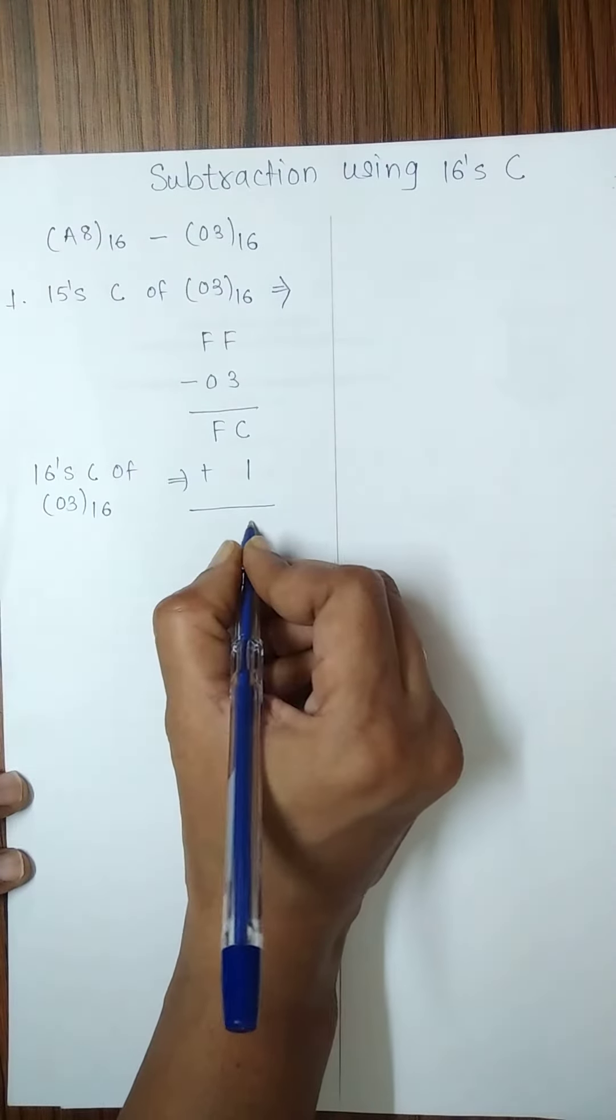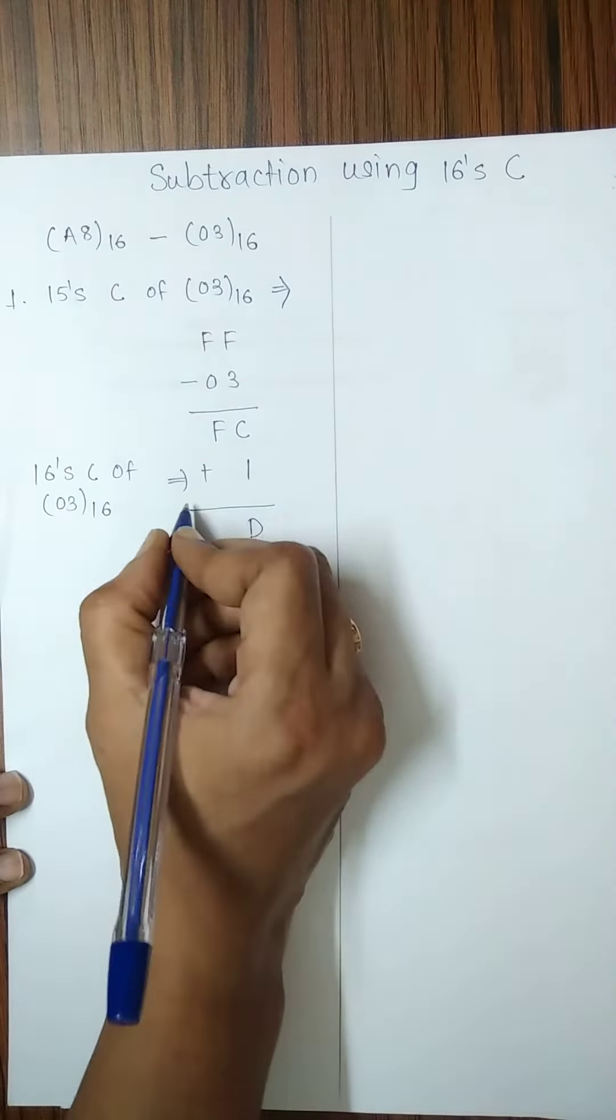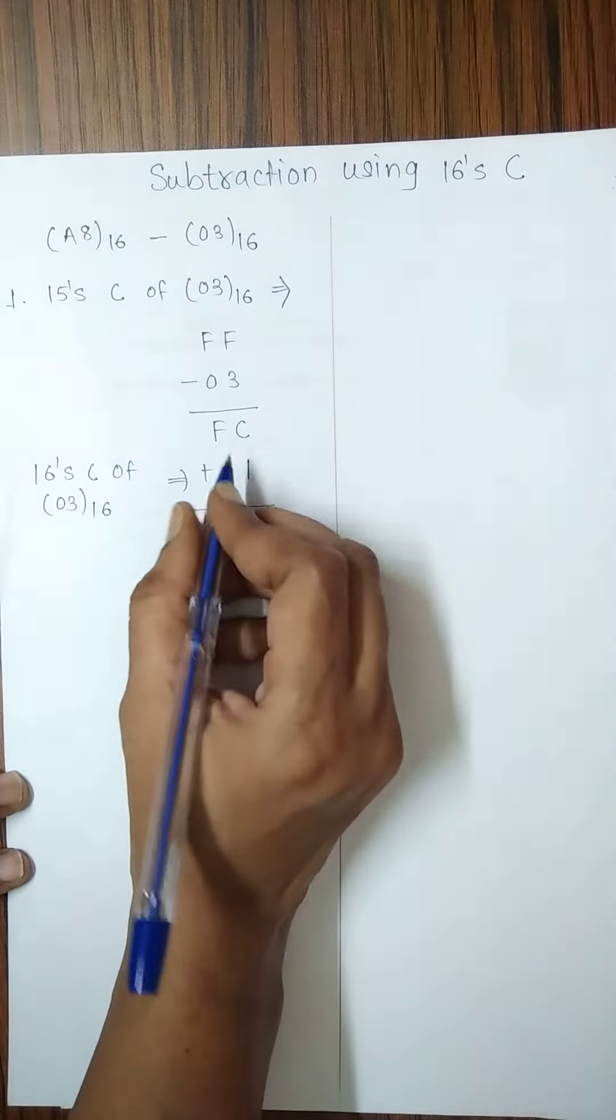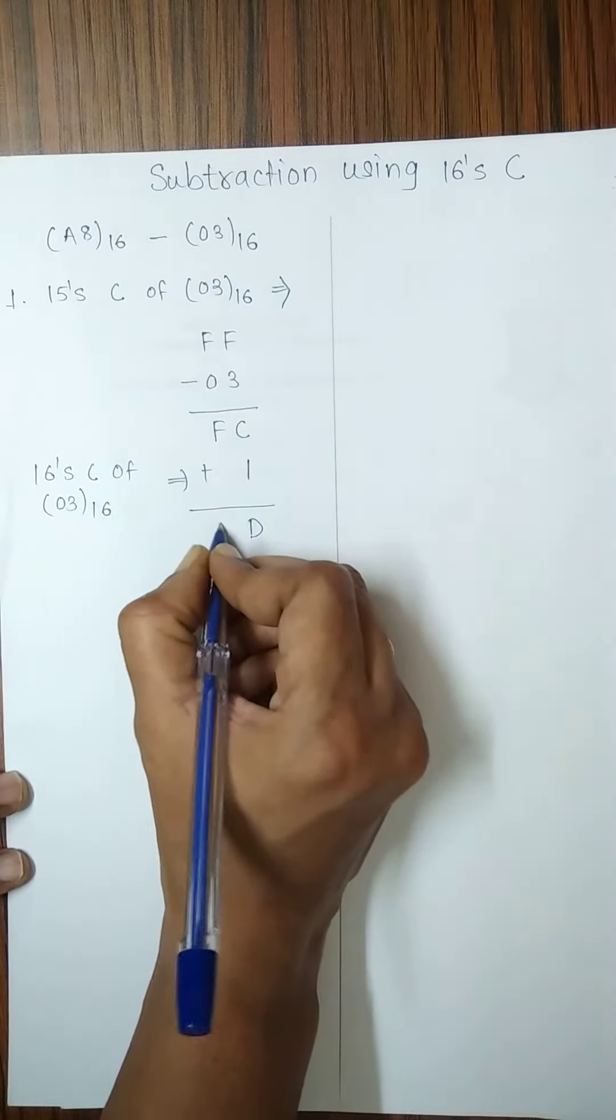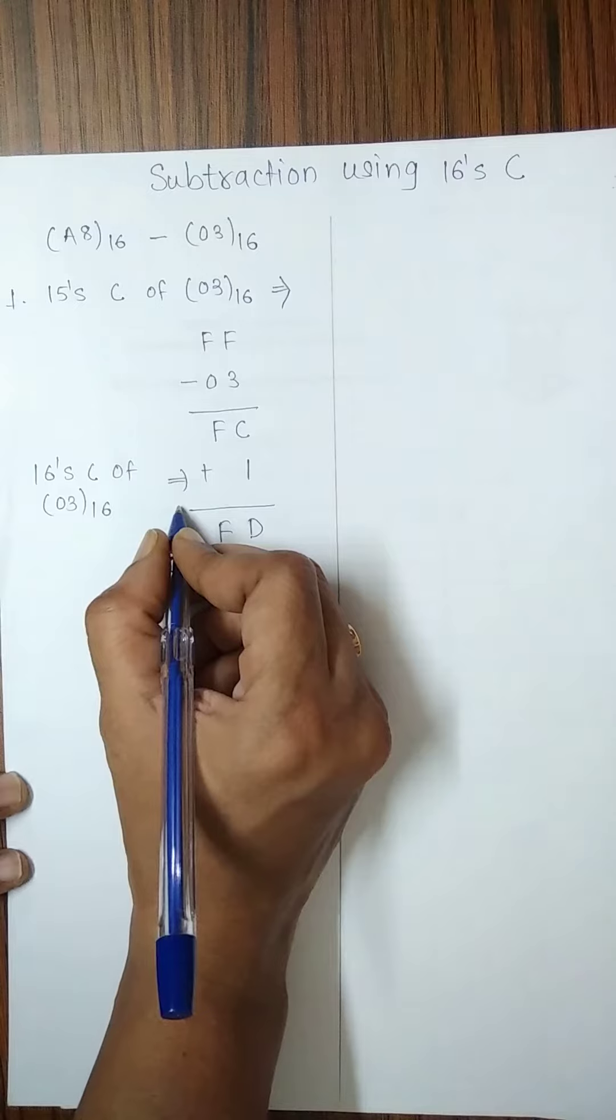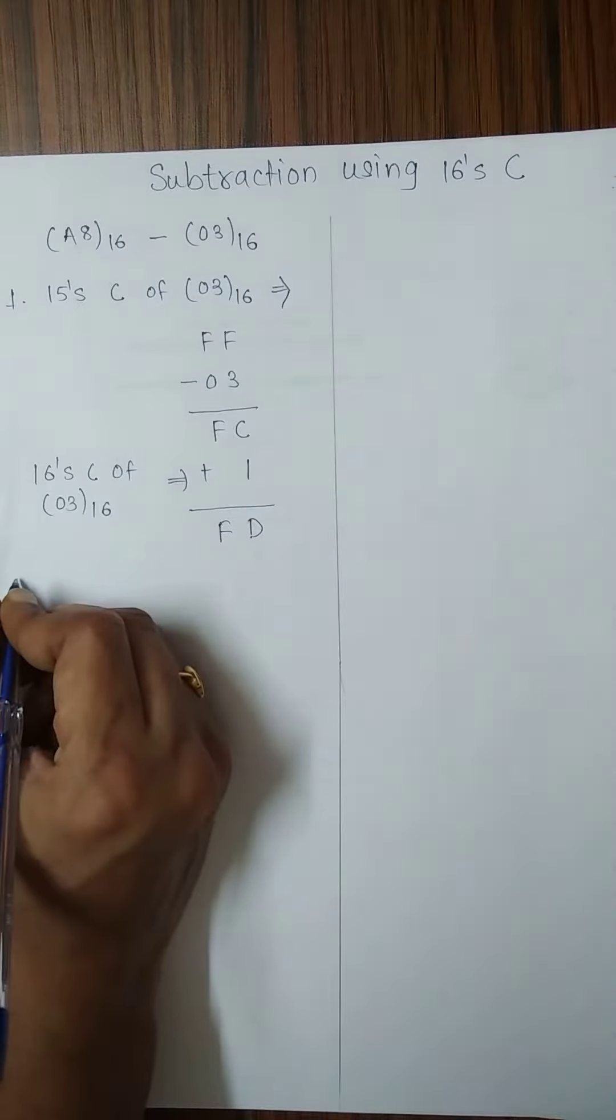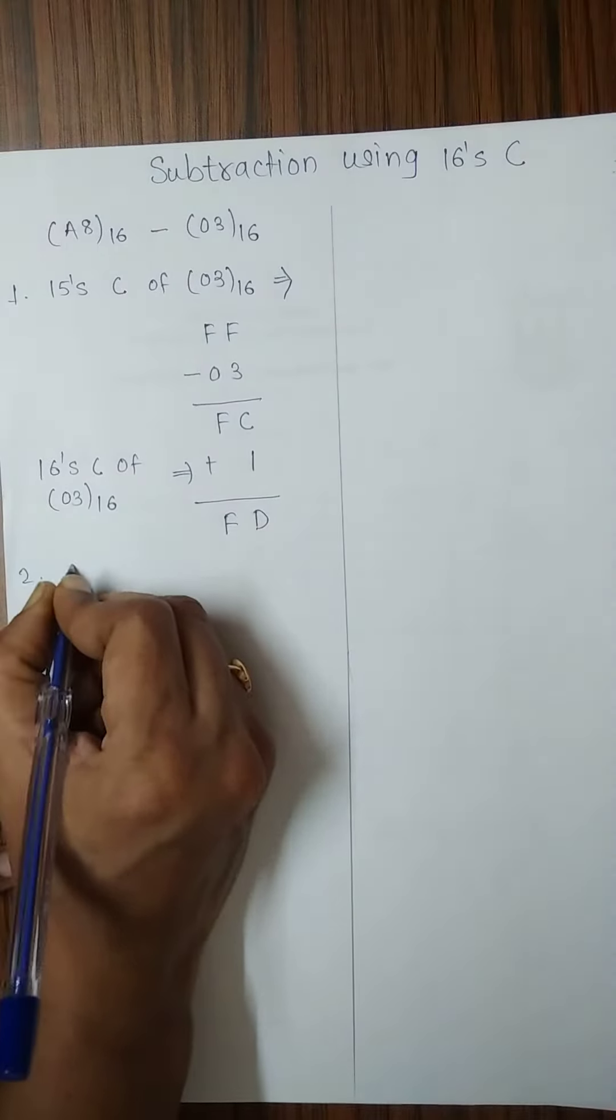C plus 1 is 13. 13 modulus 16 is 13. 13 divided by 16 is 0. 15 modulus 16 is 15. 15 divided by 16 is 0. So, carry 0. Then by following the second step,